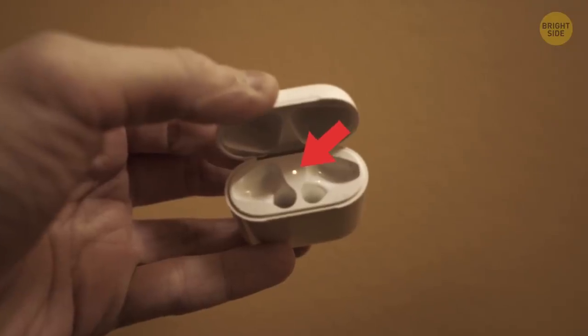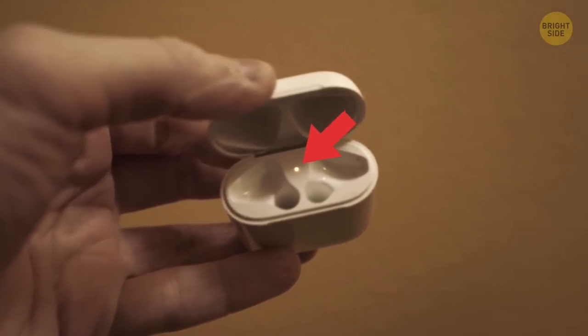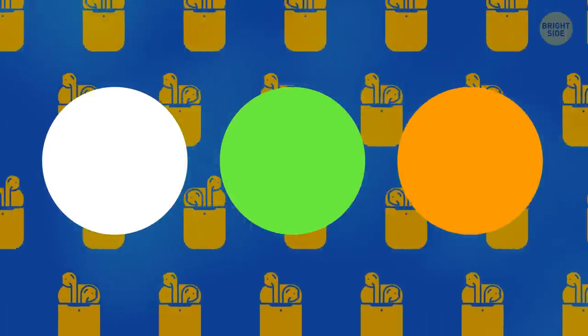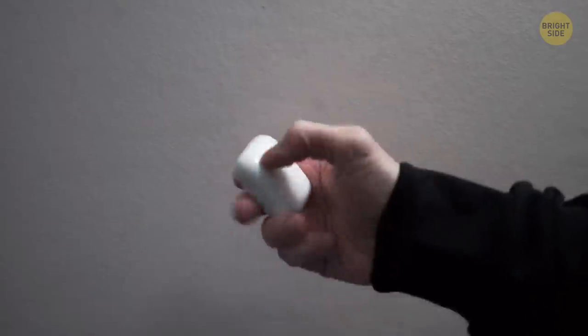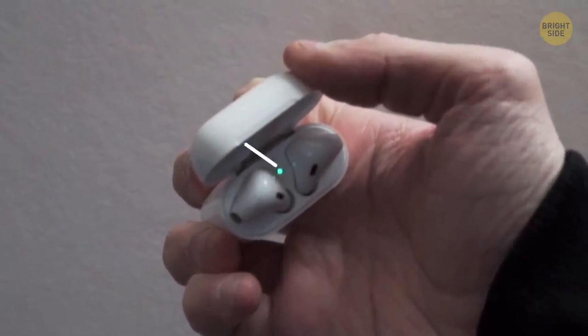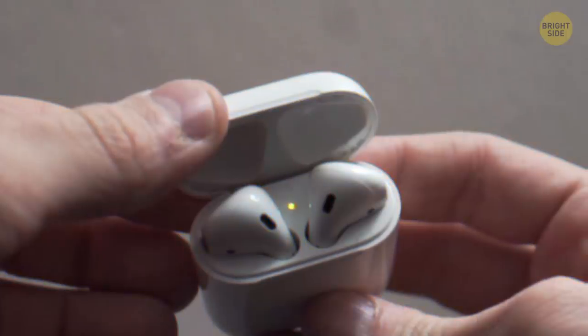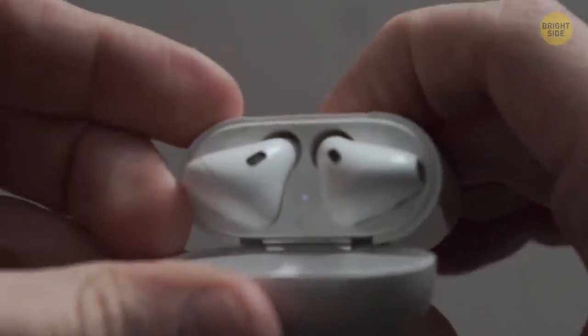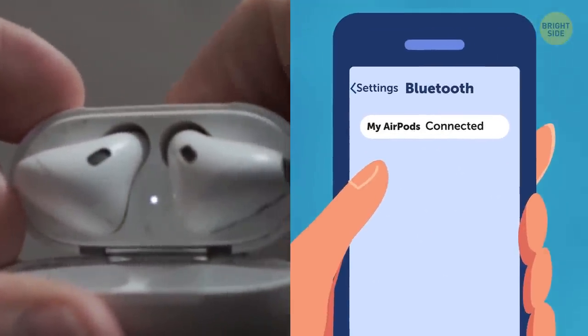I've already mentioned the AirPods' status lights inside the charging case. Understanding what their colors mean can come in handy in different situations. So, if your AirPods are inside the case and the lid is open, the green light means that your AirPods are fully charged, and amber indicates that less than one full charge remains. If the light is flashing white, they're ready to set up with a new device.